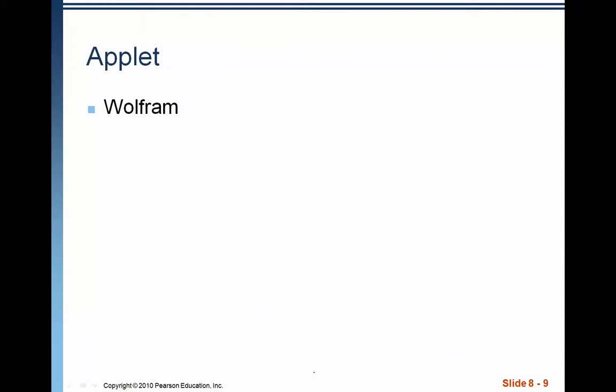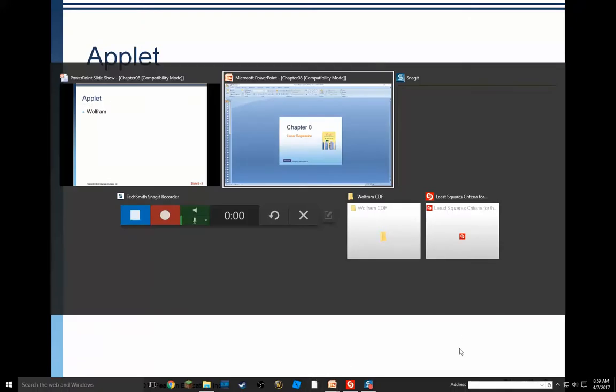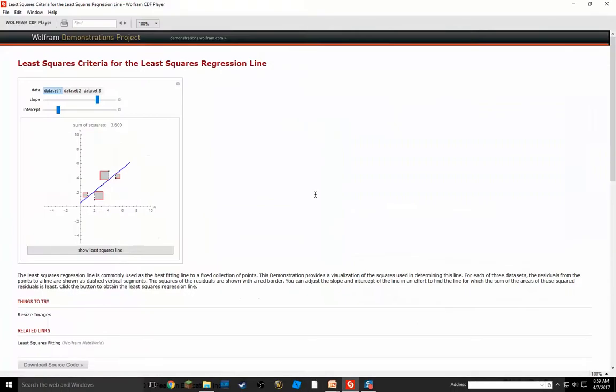And I've got a little applet here, which you can download off of Wolfram Alpha, that kind of shows this. So here we have a data set of 1, 2, 3, 4, 5 points. And you will see these squares associated with them. Now notice that as I move the slope, I can reduce the slope, see how the squares are being changed.